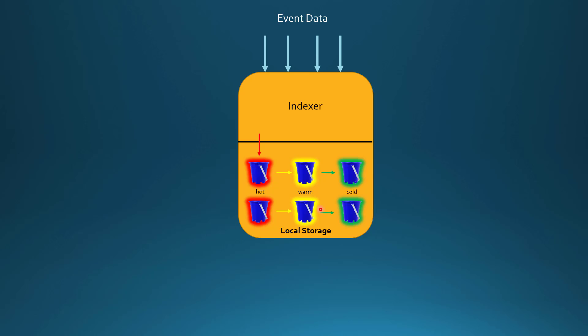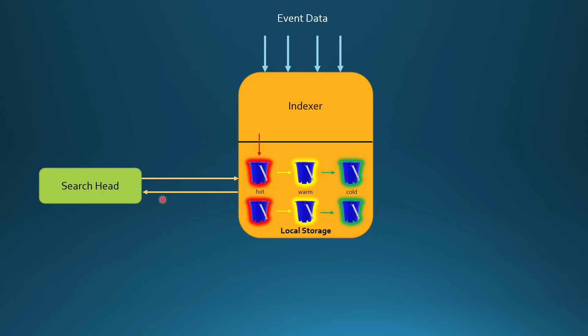If you look at this, everything — all these buckets — is stored in local storage or local cache. Once we are running some searches from our search head, it basically uses these buckets to get the necessary data needed for our search results, and then returns results back to the user.